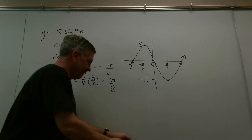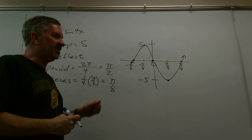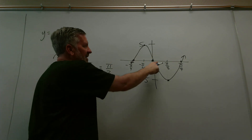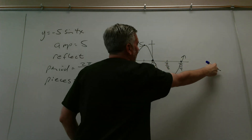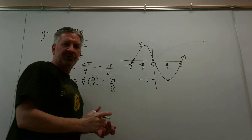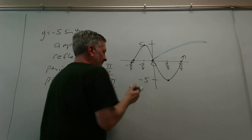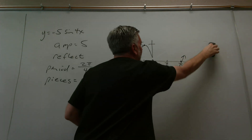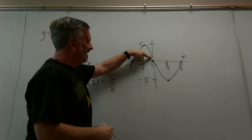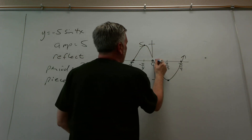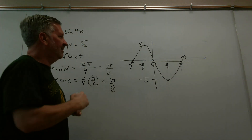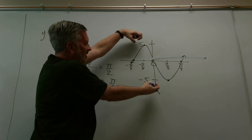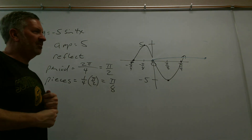If you were to sketch the original sine graph alongside this one: the original crosses at (0, 0), heads up to the right, and its high point at pi over two — which is way out further — only goes up to one. The black graph has taken the original sine graph and stretched it vertically and squished it horizontally.